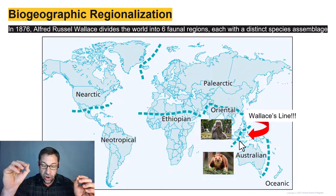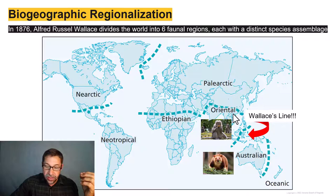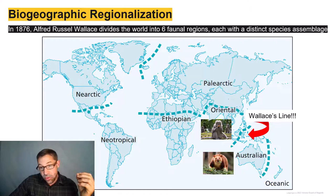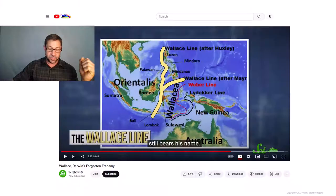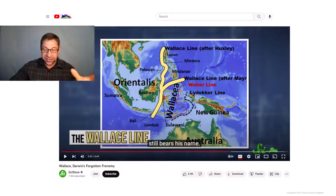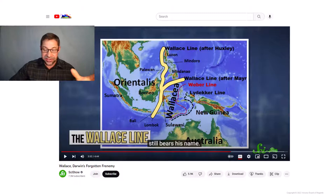Bali and everything north of what has been deemed Wallace's line is Asian — part of the Oriental species assemblage. Think crab-eating macaques. Meanwhile, everything south of Wallace's line is Australian — think tree kangaroos on Papua New Guinea. Please put me on pause and check out 'Wallace, Darwin's Forgotten Frenemy,' which is embedded in Canvas.